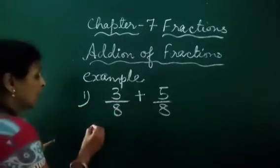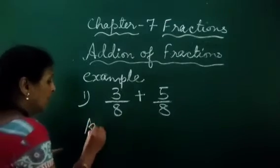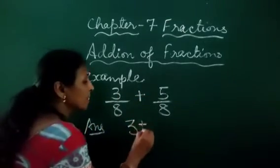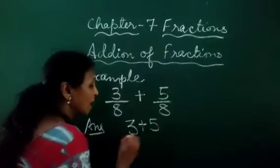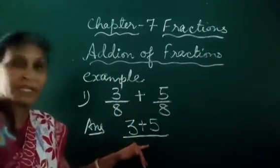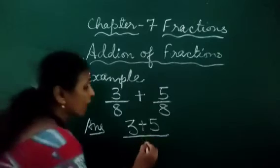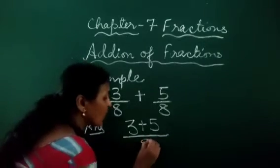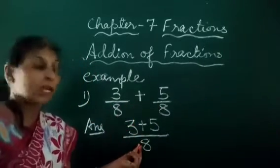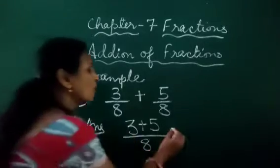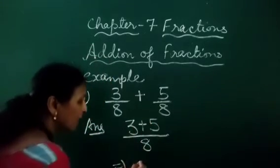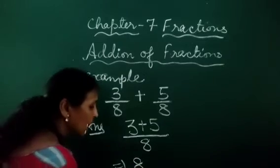First we add the numerators — that is 3 plus 5. And we write the common denominator, which is 8. Now we add it: 3 plus 5 is 8 upon 8.